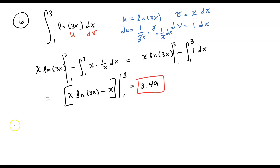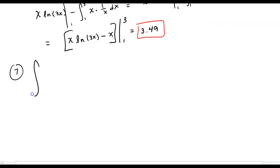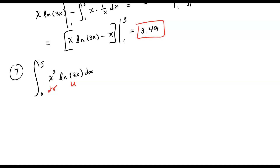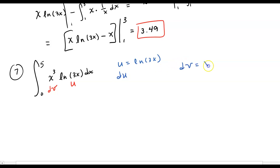I think we've got time for one more example — number 7. Again, we're going to integrate a natural log function: x³ times the natural log of 3x dx. I'm going to take my u to be the natural log, and in this case my dv to be x³ — that's just the algebraic function, easier to integrate. So u equals the natural log of 3x, dv is x³, du is 1 over 3x times 3, which is 1 over x dx.